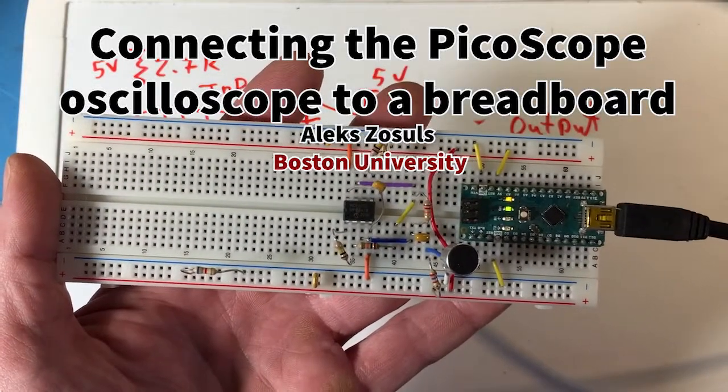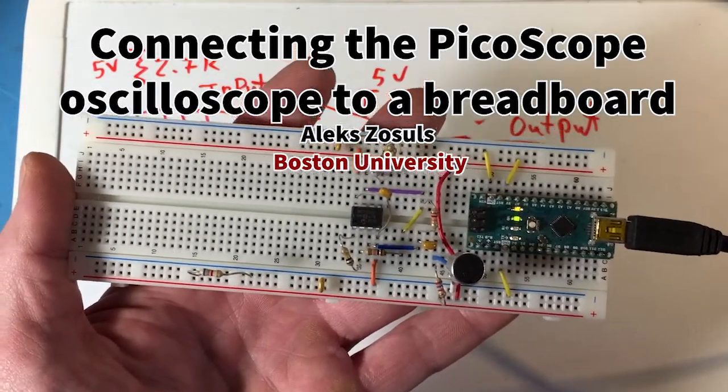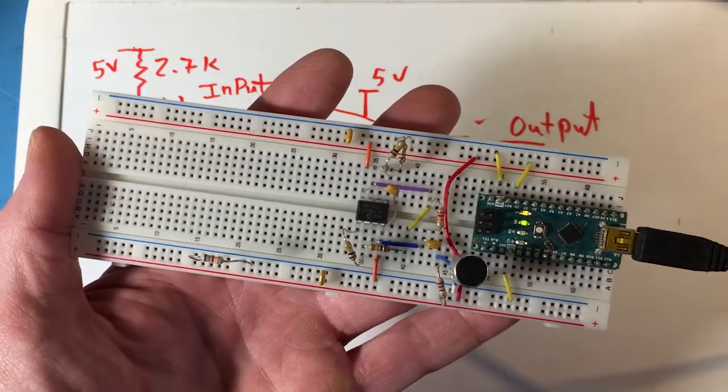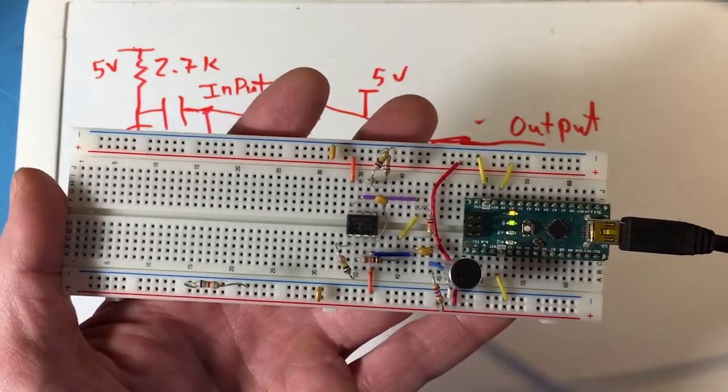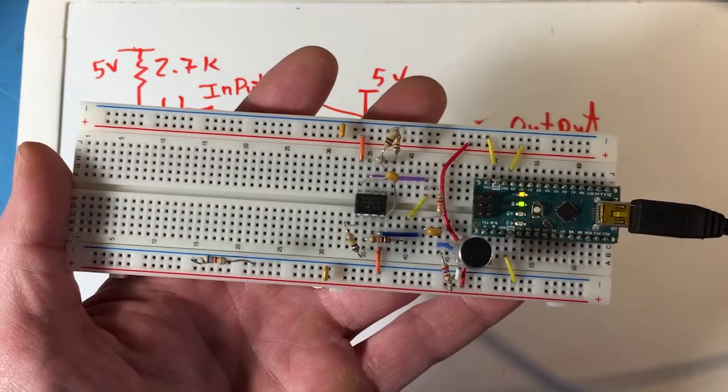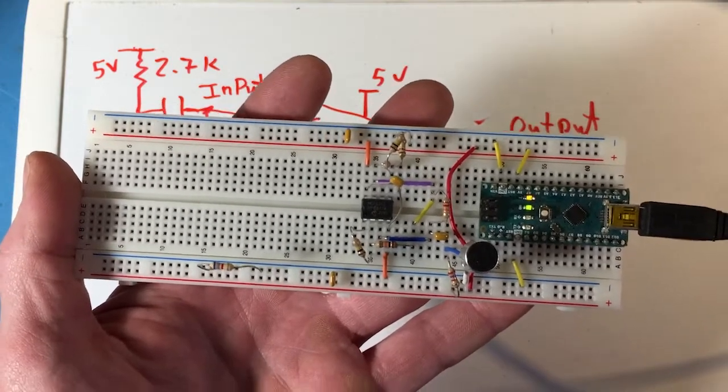An oscilloscope is an instrument that is used to measure voltage versus time, and whereas your multimeter can measure voltage at single points in time or give you a sampling of that, the oscilloscope can follow the waveform in time.